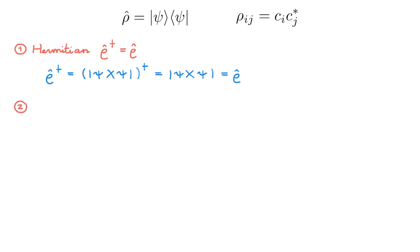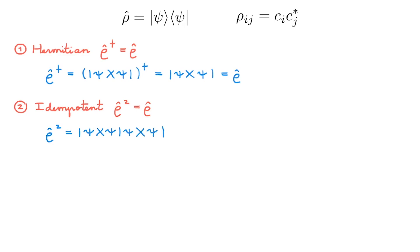The second property is that the density operator is idempotent, which means ρ² = ρ. This is trivial to see as ρ² equals the outer product of ψ multiplied with itself — this bracket in the middle gives 1, so we get the outer product which equals ρ. This property, which is the defining property of a projection operator, is true for a pure state because the density operator is simply a projection operator in this case. However, this is no longer true for a mixed state, and consequently this property is not satisfied by mixed states.